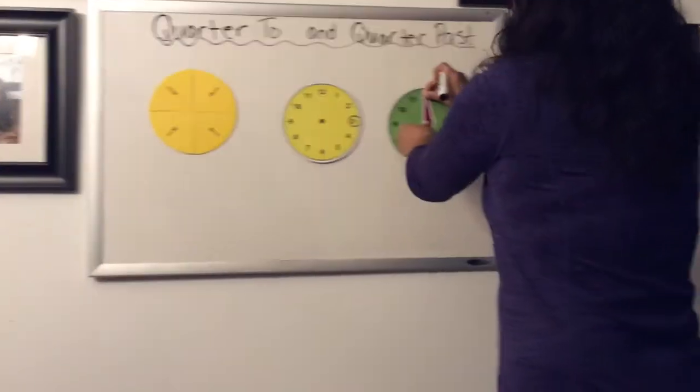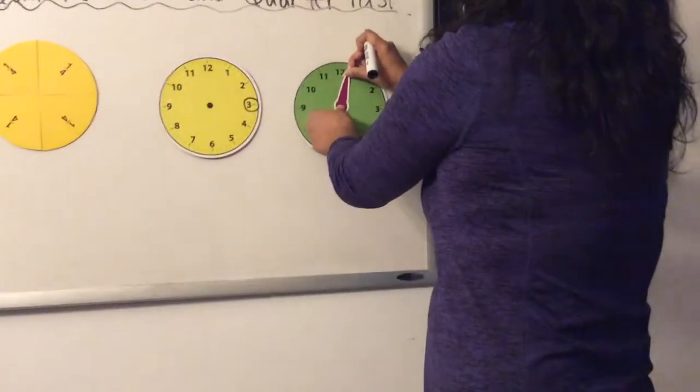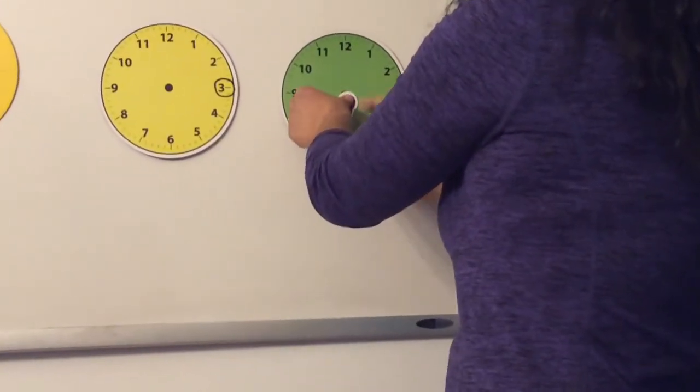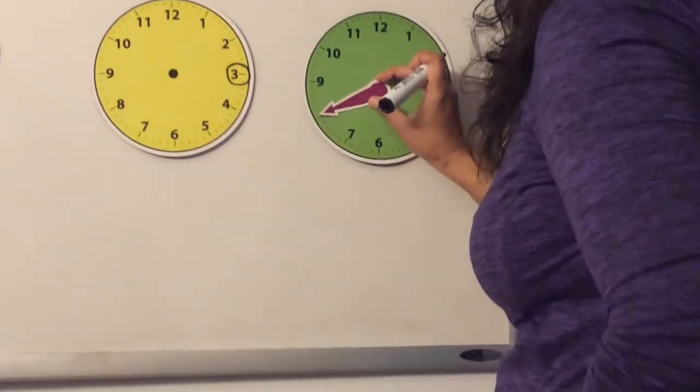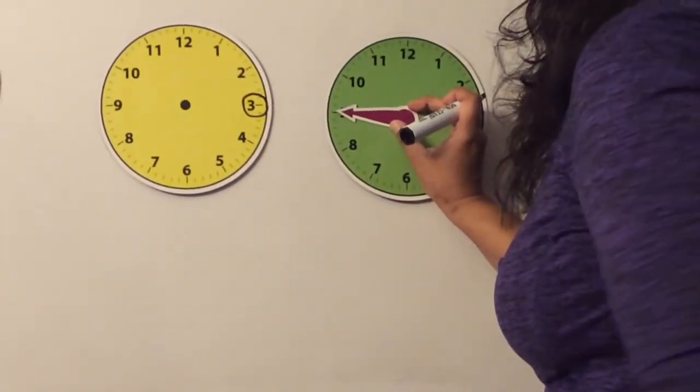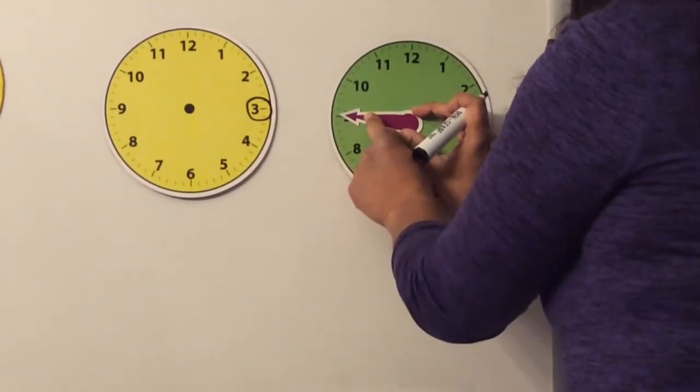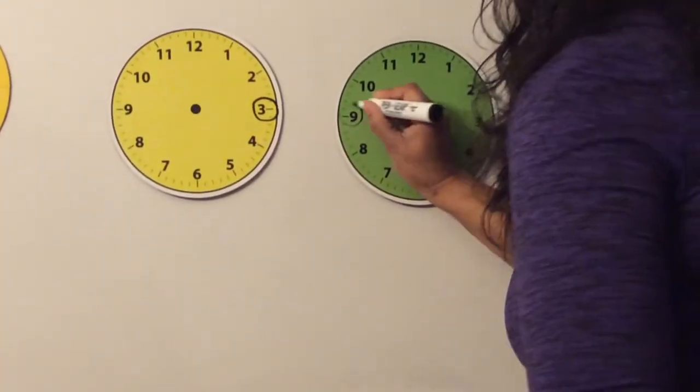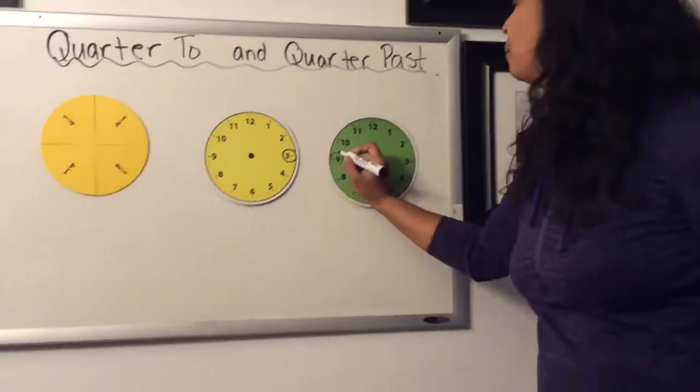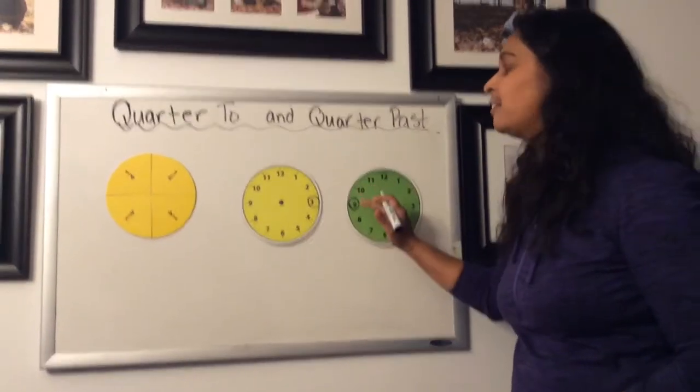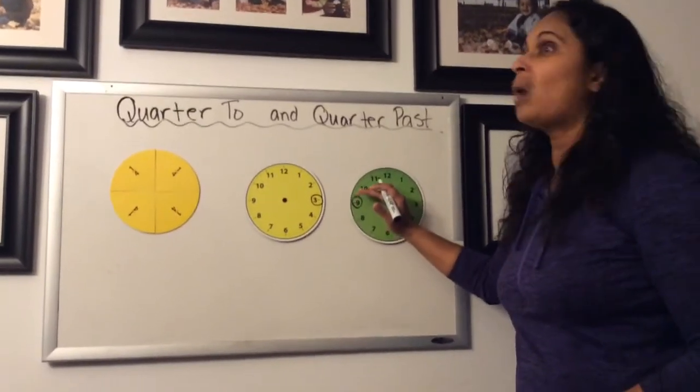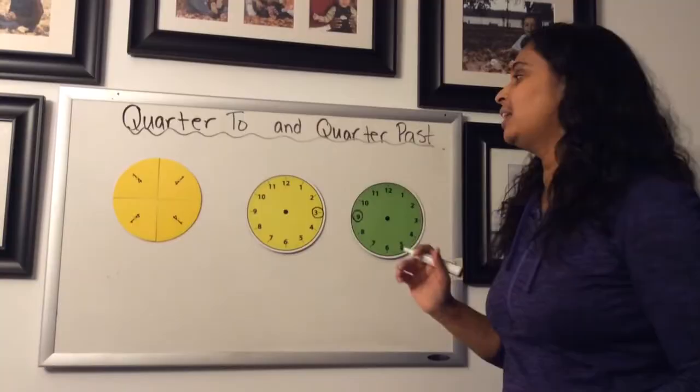In other words, the minute hand has gone all the way around the clock until we are one quarter of the way to the next hour, and that would be at the 9. When the minute hand is on the 9, that signifies that we are one quarter to the next hour.